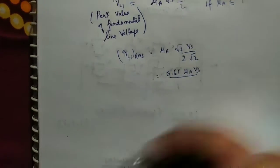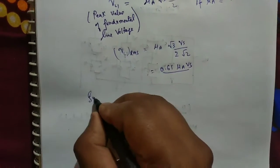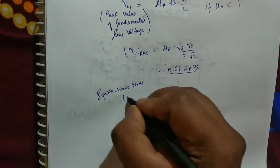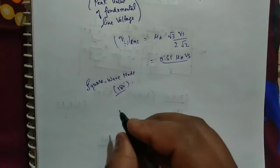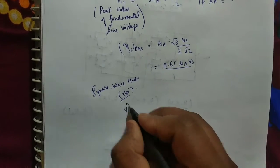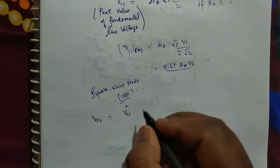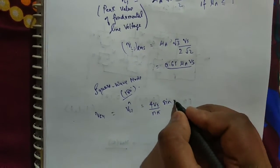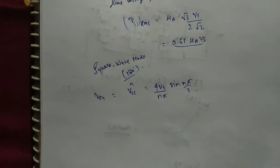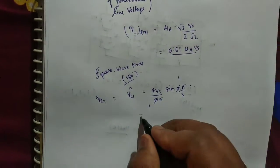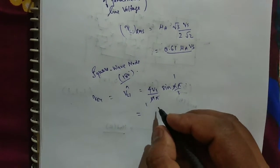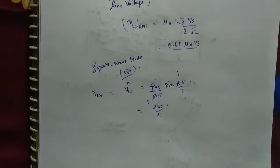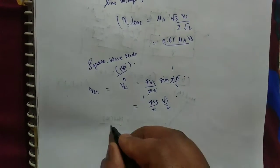Now see, in square wave mode, 180 degree mode, V_RY that is V_R, its peak value is 4V_S by nπ sin(nπ/3). Here n is 1, so it will become 4V_S by π sin(π/3).